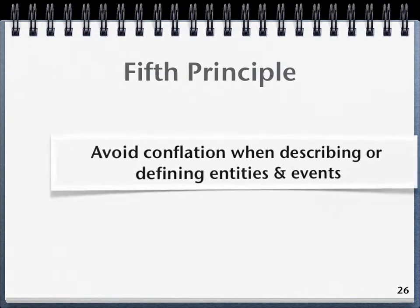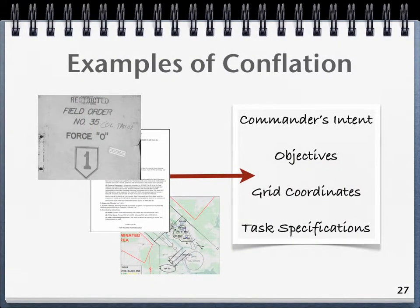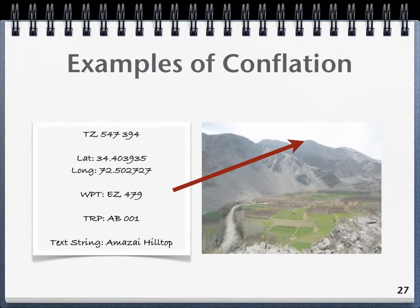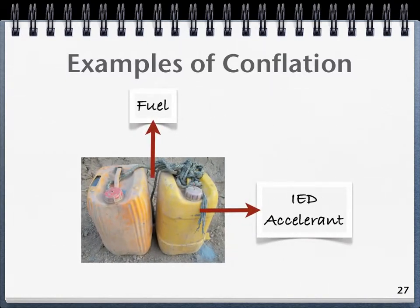Fifth principle: avoid conflation. When describing and defining entities or events, conflation occurs when the identities of two or more entities or events become confused. The practice of treating two distinct things as if they were one results in confusion and misunderstanding. Common examples of conflation include: first, conflating information-bearing entities such as planning documents with the information contained within the plan, such as commander's intent, objectives, grid coordinates, or task specifications; second, conflating designations for location with the actual geospatial location; and third, conflating an entity's genus or parent class with a role that the entity could be in.